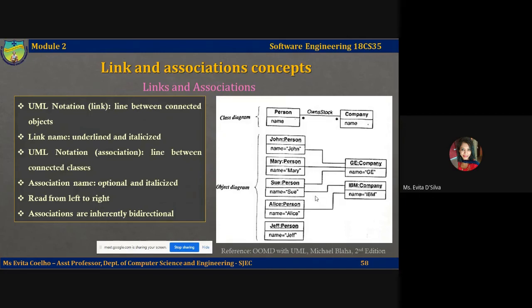Associations are read from left to right — so we read: 'a person owns stock with a company.' However, associations are also bidirectional, meaning they can be read from both ends. A company can sell stock or have stock associated with multiple people. The asterisk symbol notation will be covered in another lecture video.